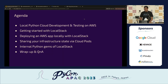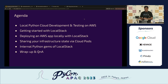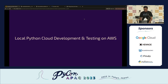So let's get started. We have a very simple agenda. We'll be talking about what it's like to do Python cloud development and testing on AWS right now. Then we'll jump into how you can get started with LocalStack, followed by a quick demonstration. I'll deploy a fully-fledged AWS serverless application on my local machine, then talk about cloud pods — something like Git for your cloud infrastructure — and wrap up with some internal Python gems, since we are at PyCon.